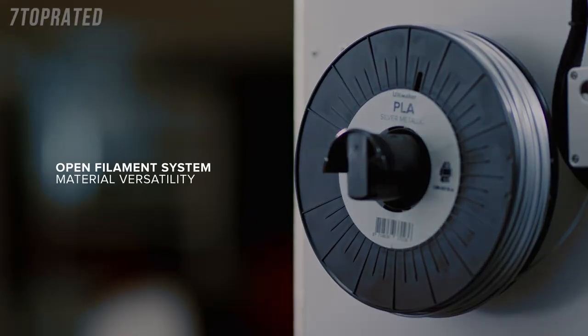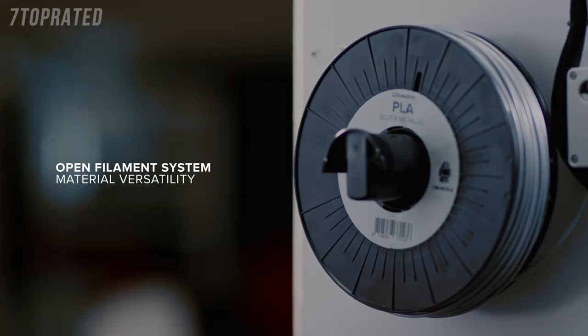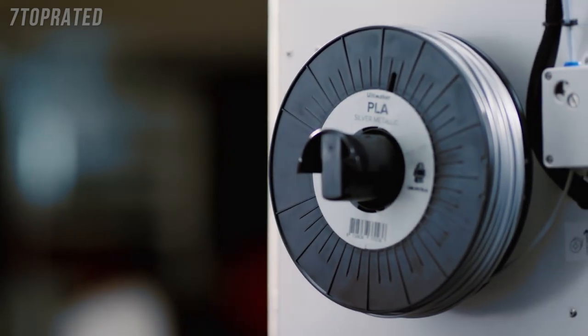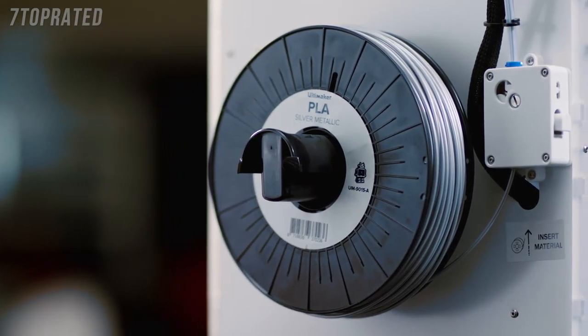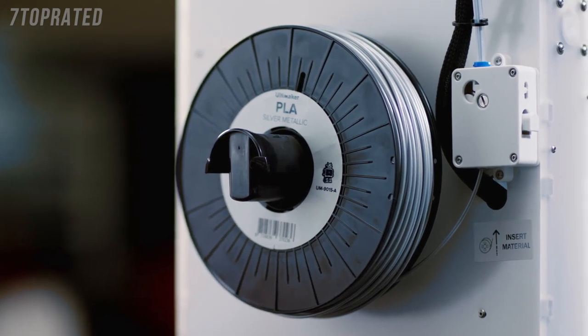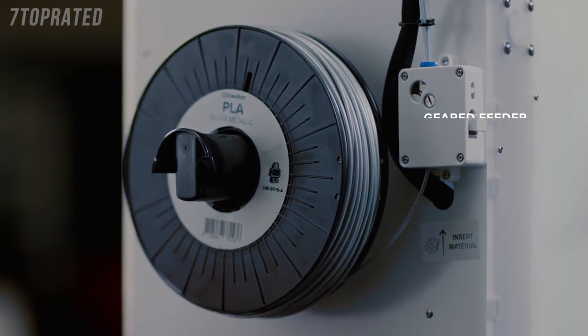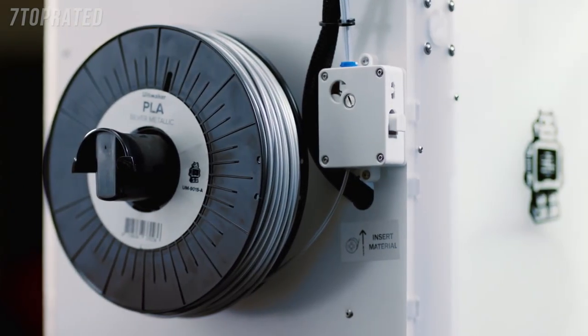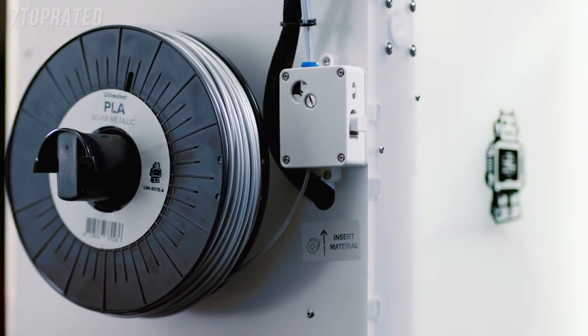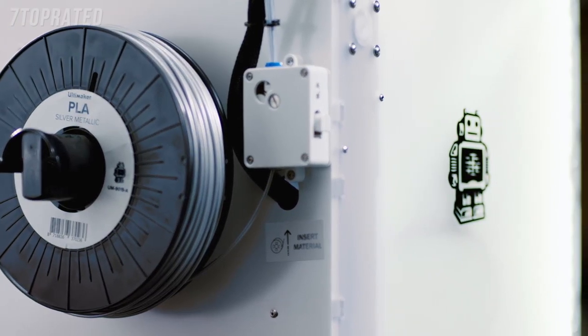The Ultimaker 2+ uses an open filament system, so you can use any kind of filament you want. When you combine the numerous materials that are available with different nozzles, the possibilities are endless. The powerful gear feeder pushes the filament into the printhead with ease. It also allows you to control the pressure. So, for example, with softer filaments, the pressure can be set lower.